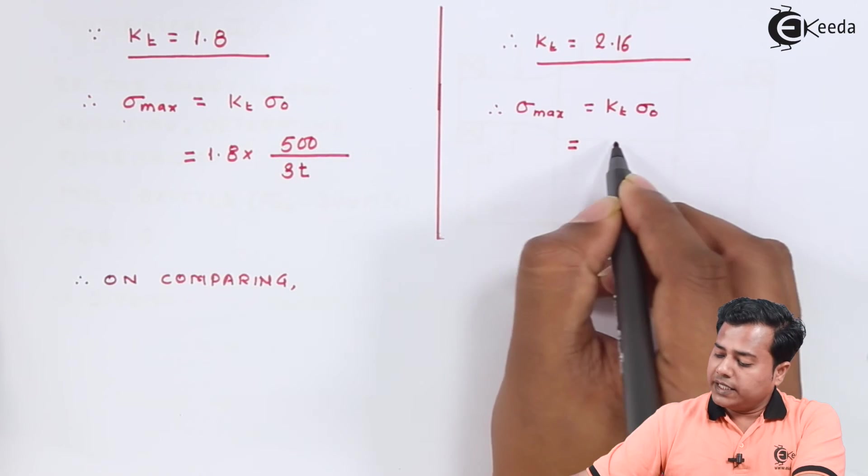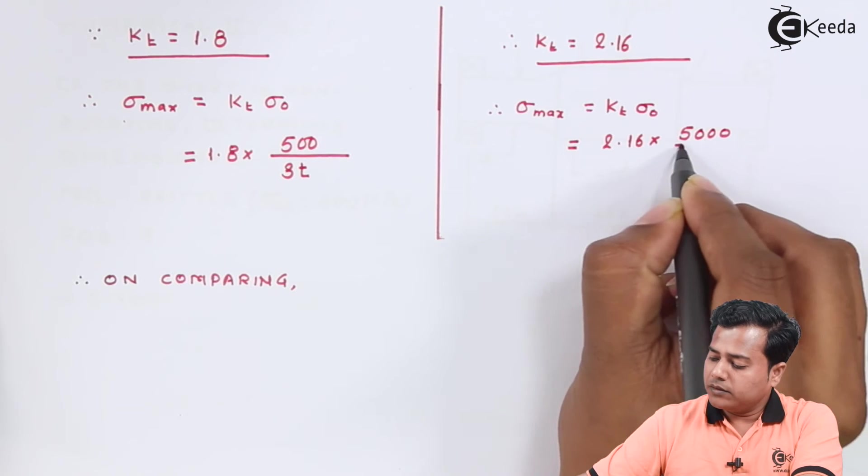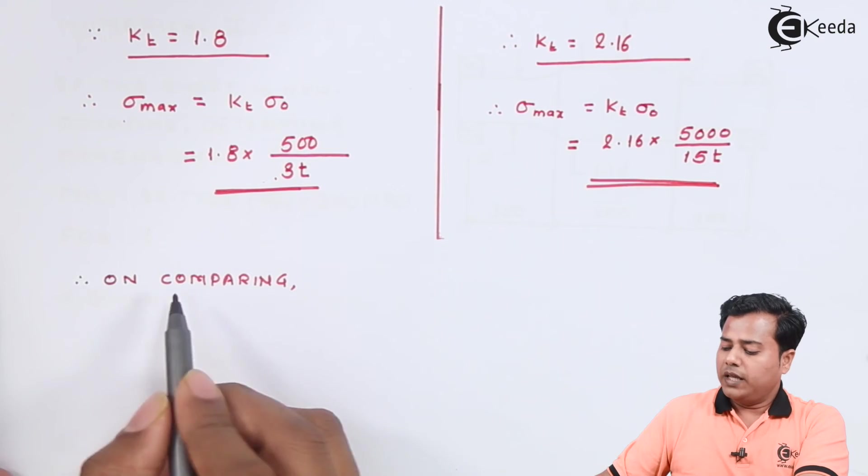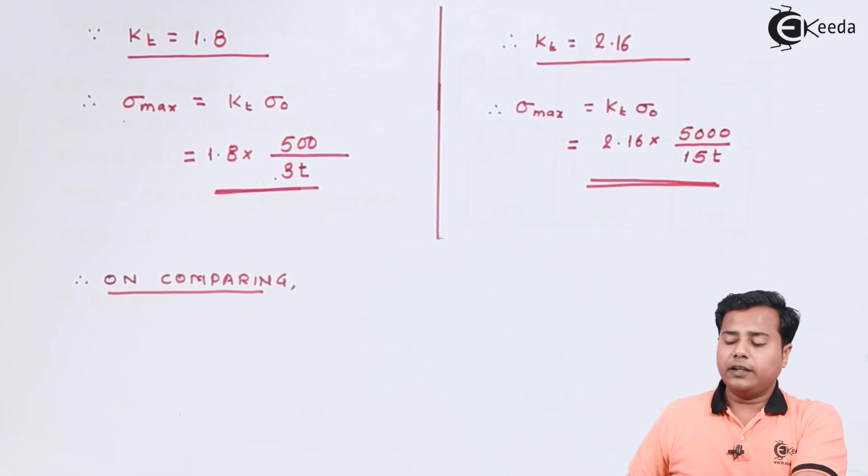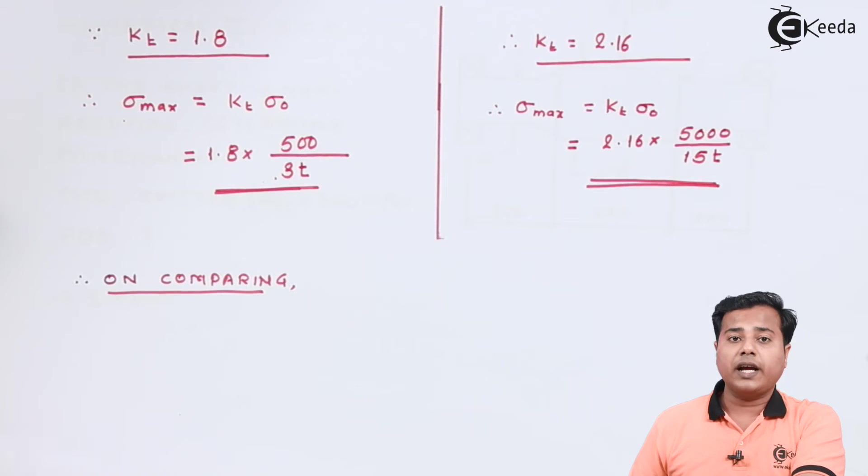And the stress in this case becomes 300 divided by t. Now it is very clear that among these two regions the stress induced in the fillet region has the higher value.